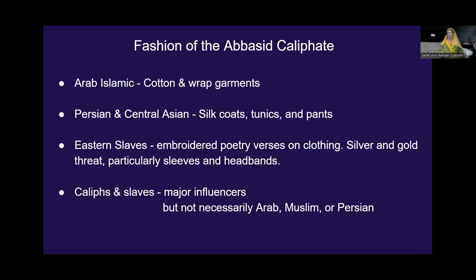Very early Arab Islamic dress — looking at Saudi Arabia even before they ventured out into conquering — you have a lot of cotton, which makes sense for that climate both in terms of agriculture and wearing it. You also have a lot of wrap garments: these are not sewn, they are literally big rectangles of fabric that you wrap around yourself in different ways. That style came to Persia with the Arab Islamic invasion, but because Iran and Iraq have high desert plateaus and mountains — it gets cold — those wrap garments became outer garments and extra layers.